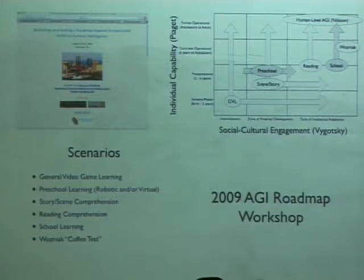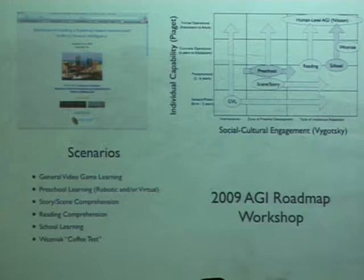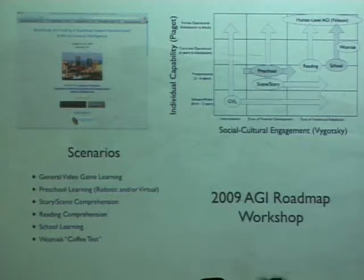Preschool learning was the thing that interested me most at the roadmap workshop — the idea that if you could make either a robot or a virtual world toddler that would have all the kinds of common sense learning and understanding that you need as a basis for adult-level AGI.